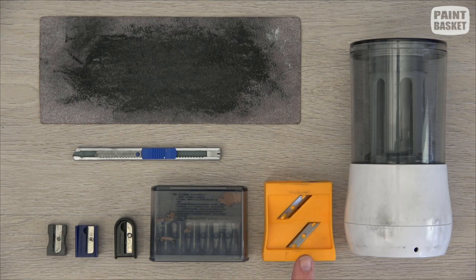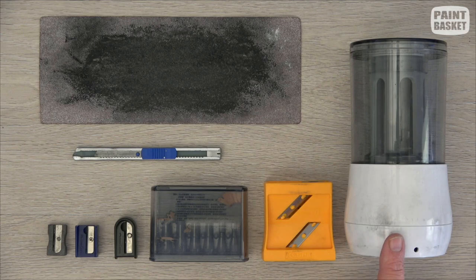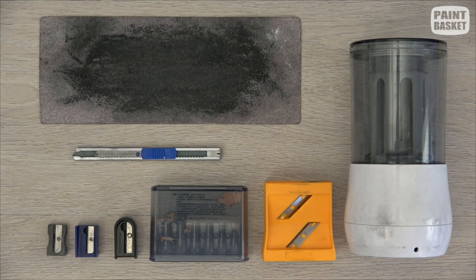This one over here was from the General Pencil Drawing Company and they advertised it as a drawing and sketching sharpener. This is an electric sharpener. Then there's some sandpaper and the trusty old knife.